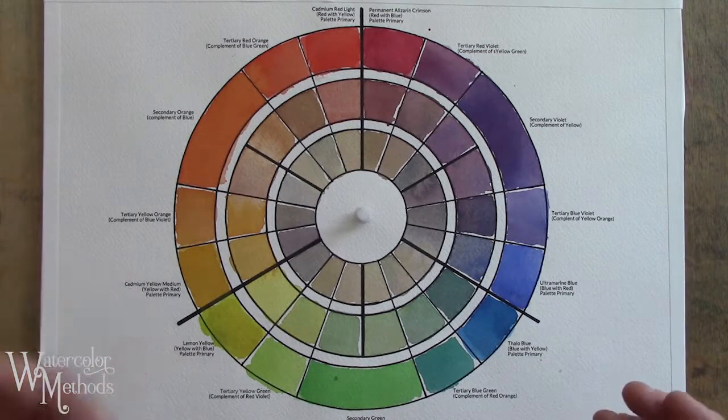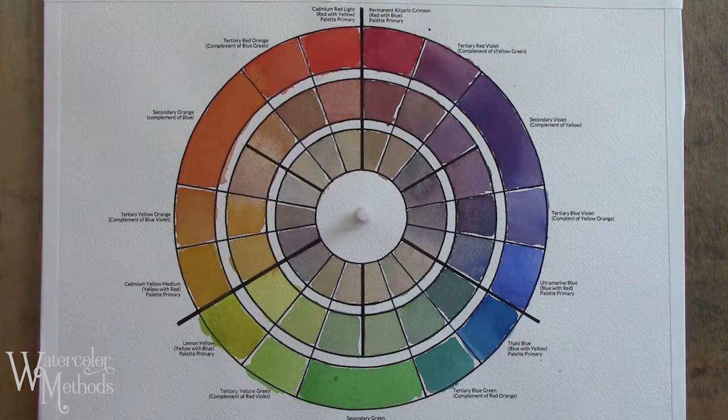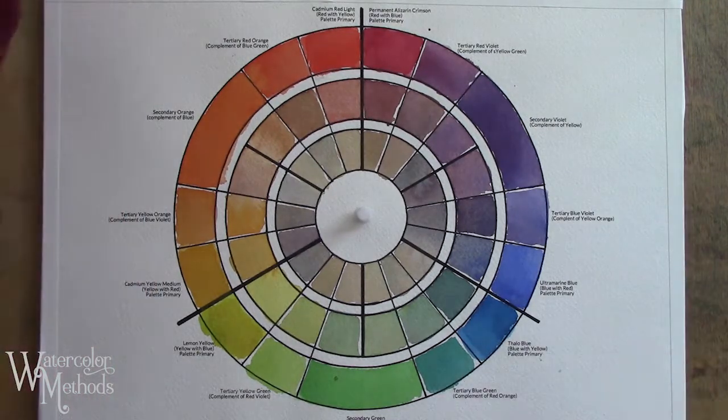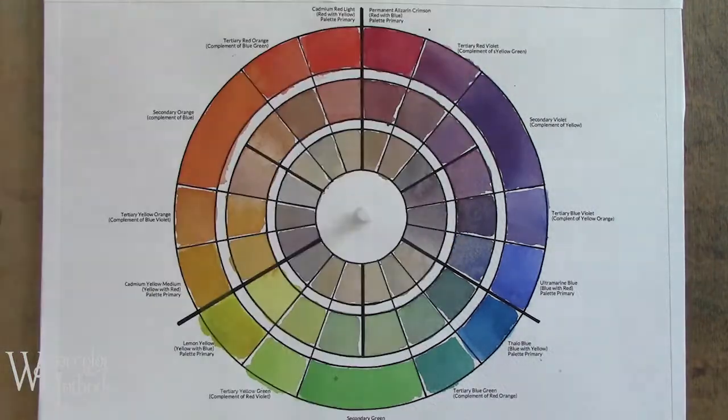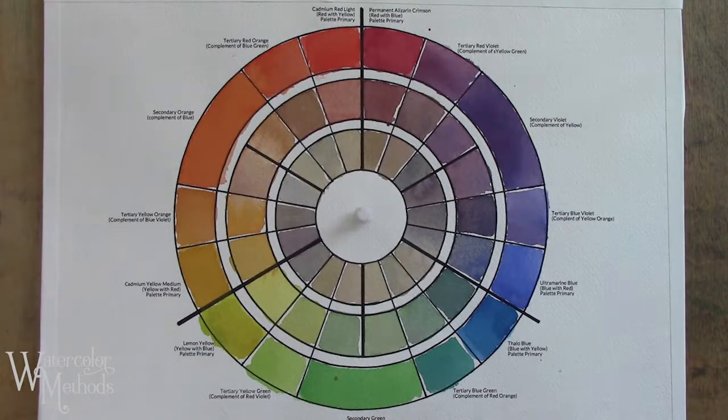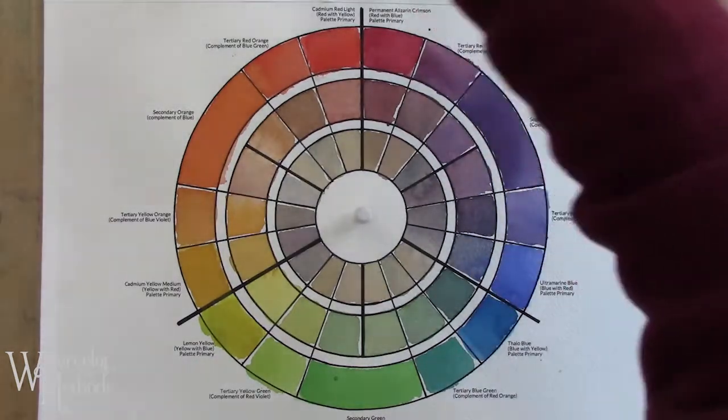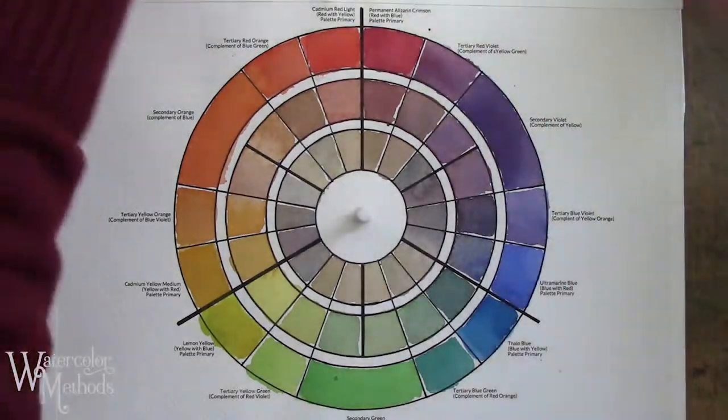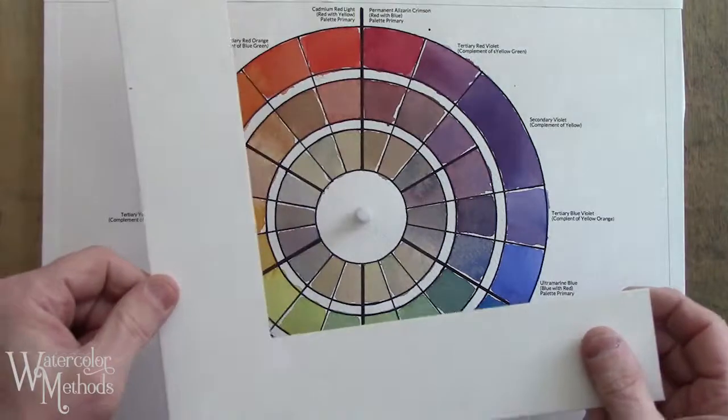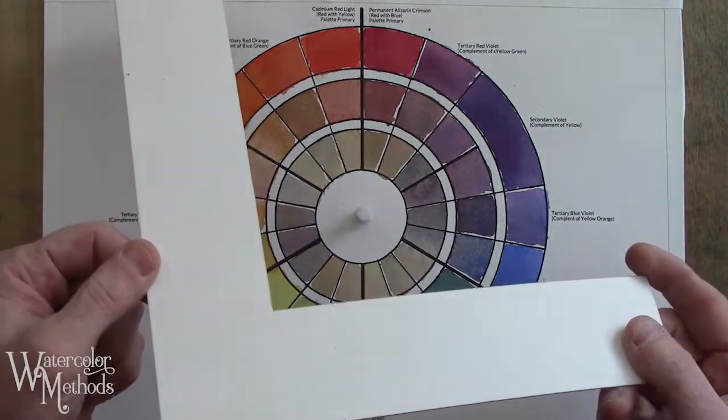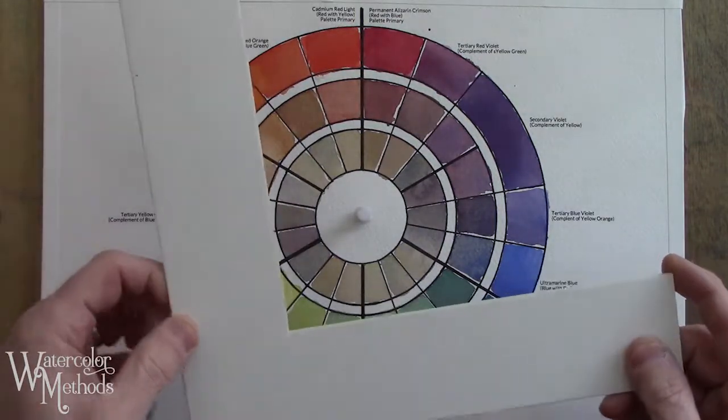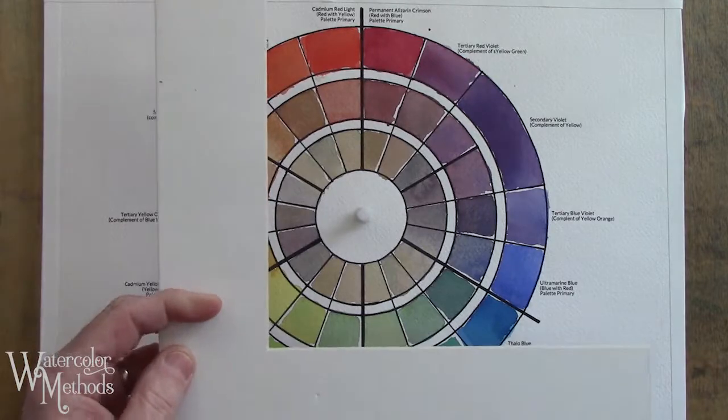What we do want to do, however, is find a way to isolate certain sections of the color wheel so we can identify various analogous color schemes. You can do that quickly and easily if you have an old piece of mat corner that's no good for matting anymore but will work for this.